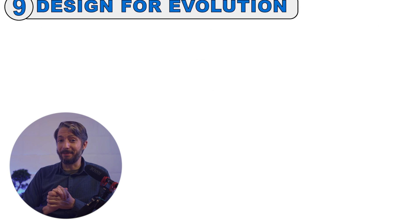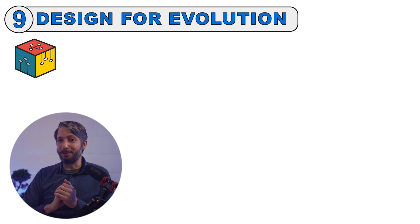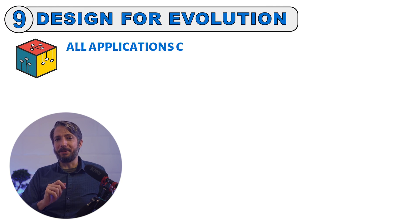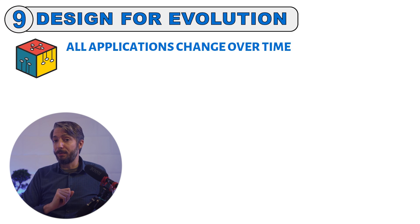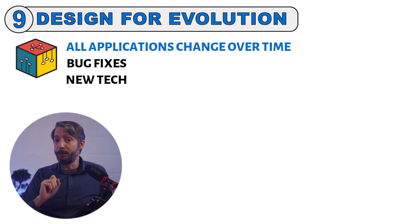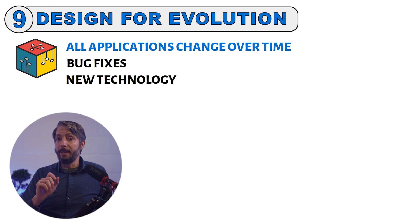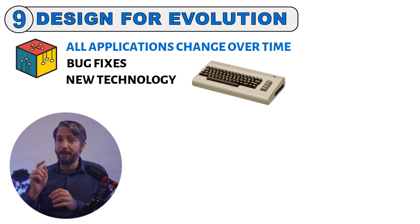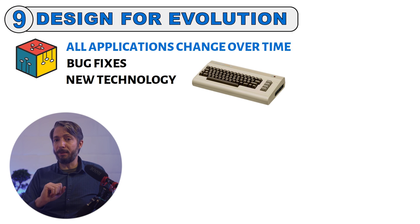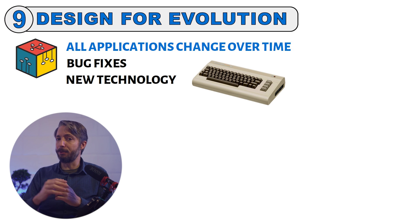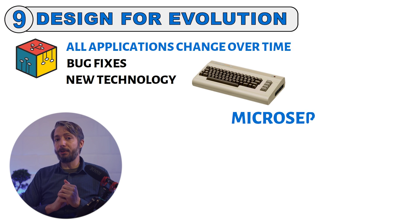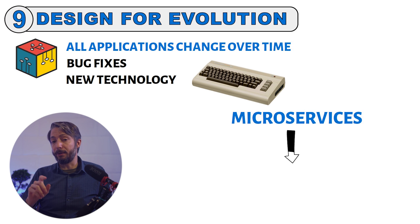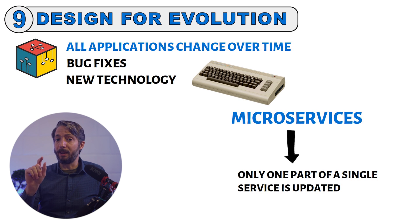We're now getting to number nine: design for evolution. All applications change over time, whether it is to fix bugs, add new features, or bring in new technologies. If all parts of the application are tightly coupled, it becomes very hard to introduce changes to the system — a change in one part may break another part or cause changes to ripple through the entire code base. Microservices is one popular way to handle this evolutionary design, where only part of a single service of the application will need to be updated.